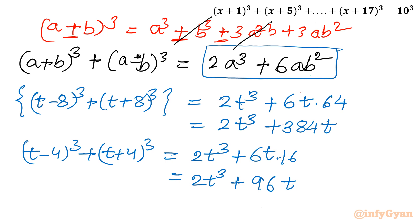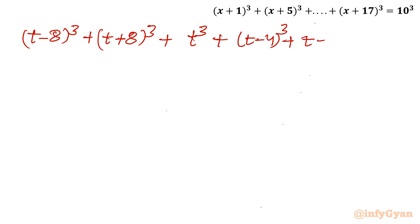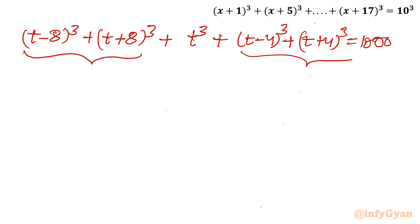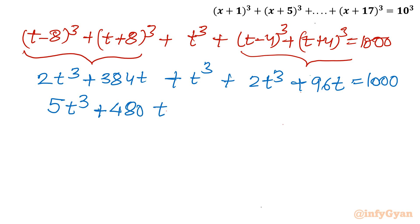Substituting back into the equation: (2t³ + 384t) + t³ + (2t³ + 96t) = 1000. Combining: 5t³ + 480t = 1000. The equation is divisible by 5, so we get t³ + 96t = 200, or t³ + 96t - 200 = 0.